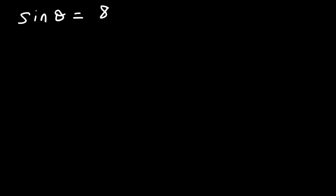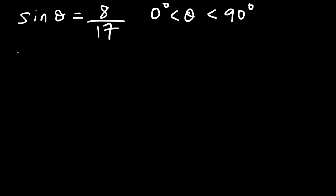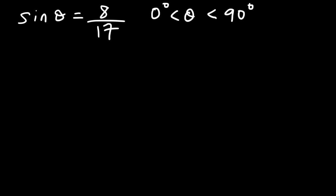Sometimes you might be given a problem like this: sine theta = 8/17, and theta is between 0° and 90°. What is cosine theta and tangent theta? The first thing to do is draw a right triangle in the appropriate quadrant.